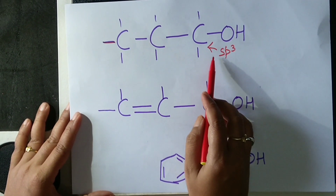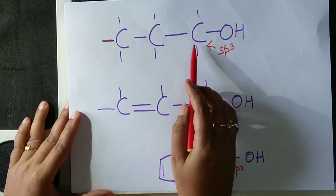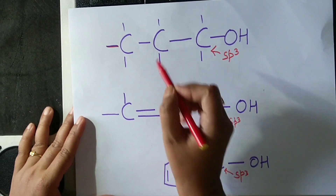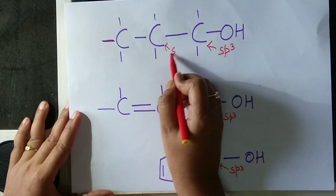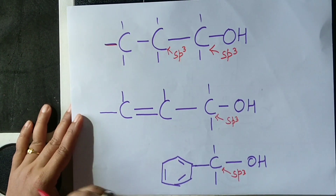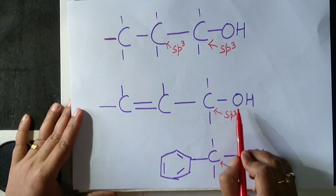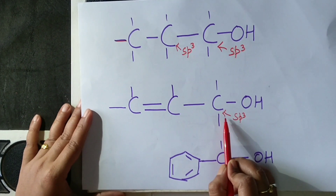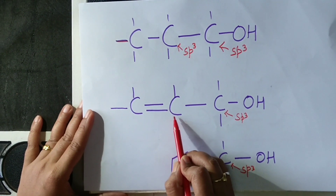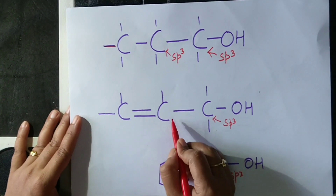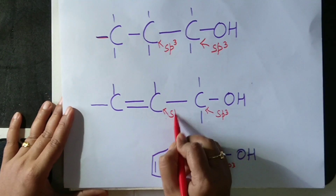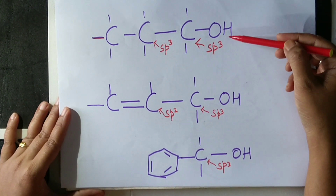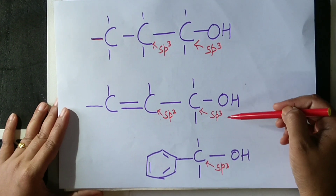In the first case, the OH is attached to an SP3 hybridized carbon atom which is next to another SP3 hybridized carbon atom. Now look at this: OH is attached to an SP3 carbon atom which is next to a carbon-carbon double bond — that is, an SP2 hybridized carbon atom. Therefore, this alcohol should be different from the other one.